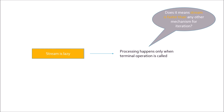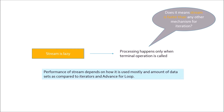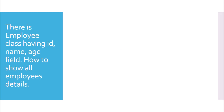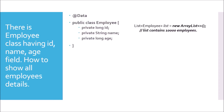Does that mean stream is faster than any other mechanism for iteration? The performance of stream depends on how it is used and the amount of data, as compared to iterators and enhanced for-loops. Moving to the next question — given an Employee class with id, name, and age fields, how do you show all employee details? With a list of 10,000 employees: list.stream().forEach(employee -> System.out.println(employee)). This will print all employees in the list.